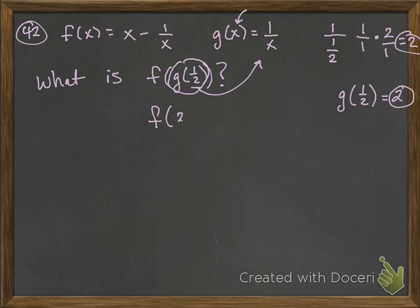So now we're going to take f at 2. We can plug 2 into my f of x function. So here's f of x, x minus 1 over x. Now we're just going to plug 2 in here.